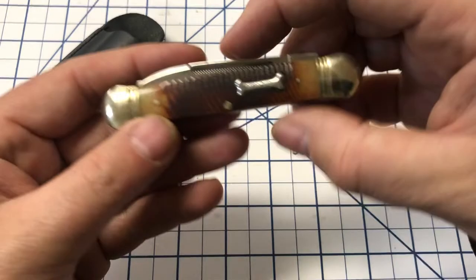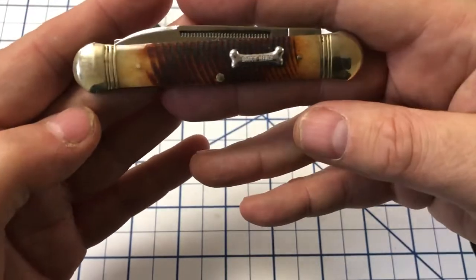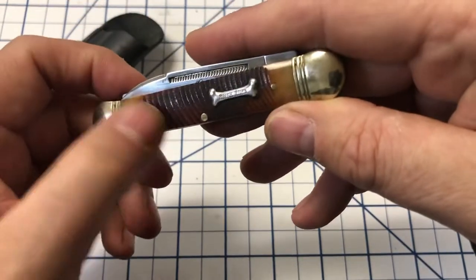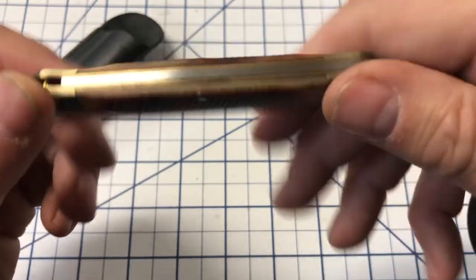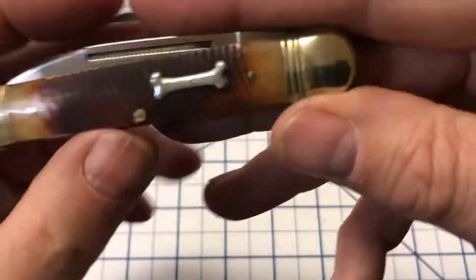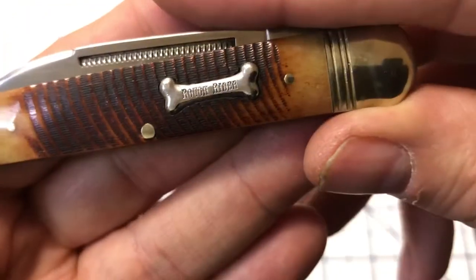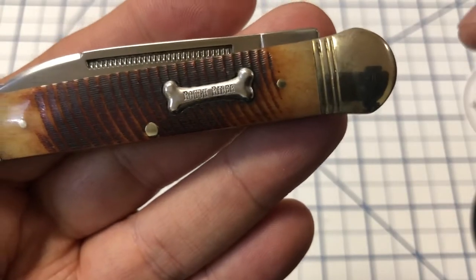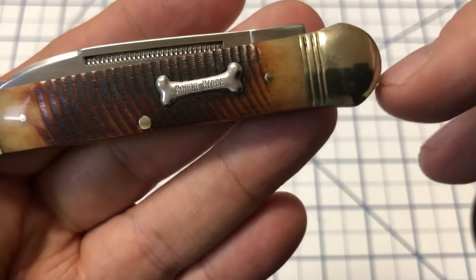Okay, let's take a look at the knife itself. This knife has saw cut bone handles and you can see they're not quite matched on this one, but that's fine. Has the Rough Rider shield shaped like the dog bone and then you have Rough Rider on it. Got the nickel silver bolsters.